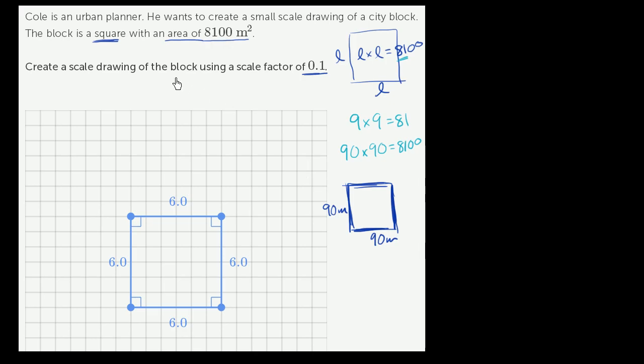Now we want to create a scale drawing of the block using a scale factor of 0.1. The actual block is 90 meters by 90 meters. But in our scale drawing, we essentially want each of the dimensions to be one-tenth of their original dimension. So we could take this scale factor and multiply it by each of these dimensions.